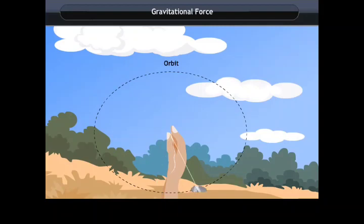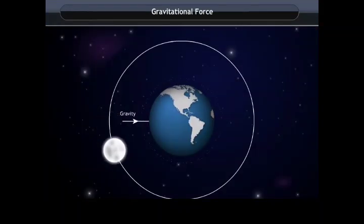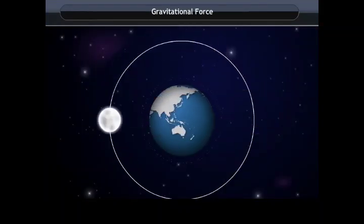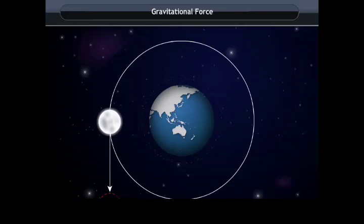What happens to the moving stone if the thread breaks? It flies off in a straight line. Similarly, if there were no gravity, the Moon would fly off along a straight line. Thus, gravitation is the force of attraction between two objects having mass in the universe, and gravity is the attraction of objects by the Earth.